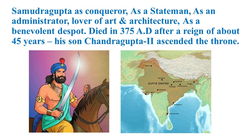Samudragupta died in 375 AD after a reign of about 45 years, during which he ruled over the whole of the Indian subcontinent. When he died, his son Chandragupta II ascended the throne of the Gupta Empire.